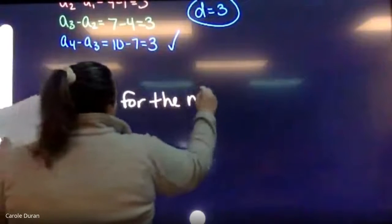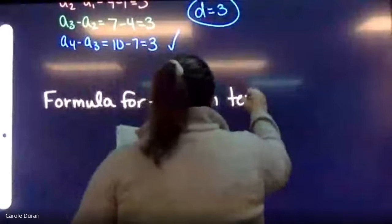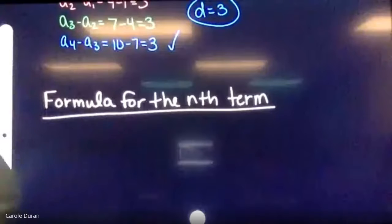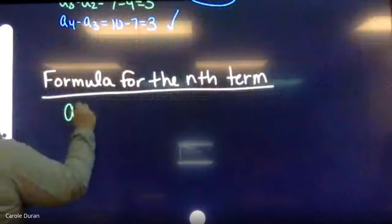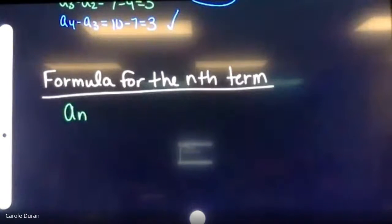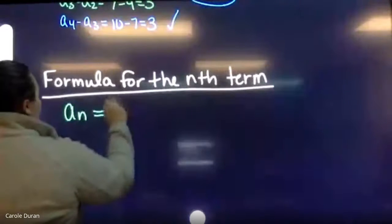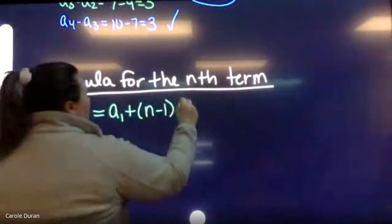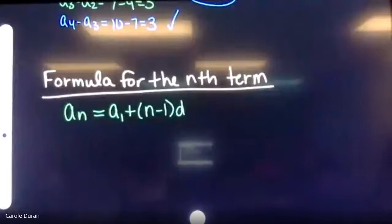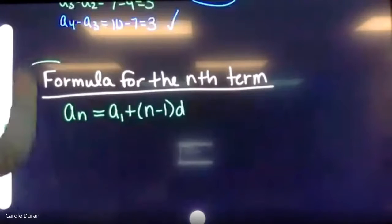This time we're looking for the formula for the nth term of an arithmetic sequence. The explicit nth term formula is: a(n) equals my first term plus n minus one times the common difference d. This is what we use when asked for an nth term rule for a given sequence.